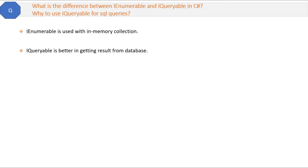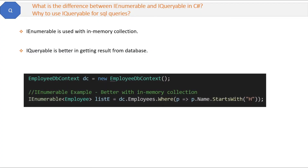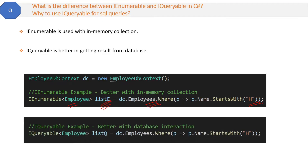Suppose you want to get records from a database through LINQ. Here we are getting records from the employees table where the employee's name starts with 'H', and you get the filtered result in list e. You can get the same result using IQueryable — the same query gives you the same result in list q.